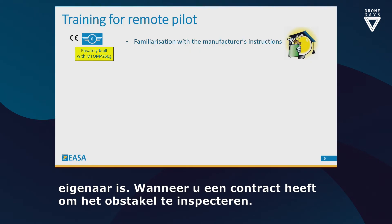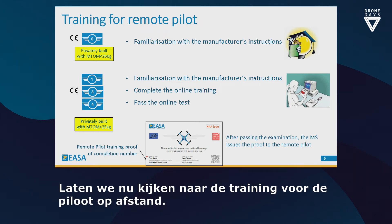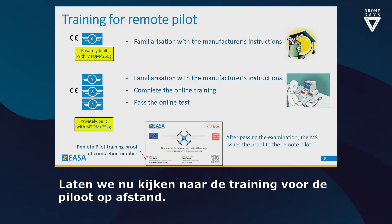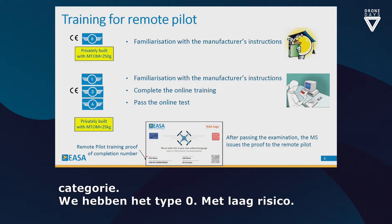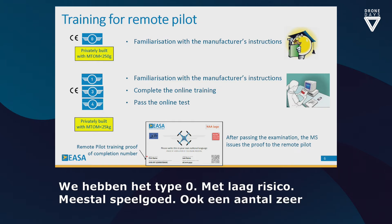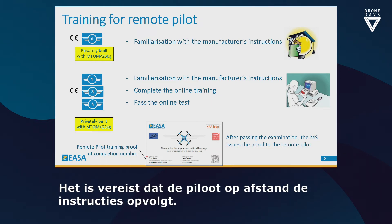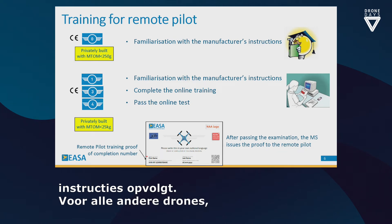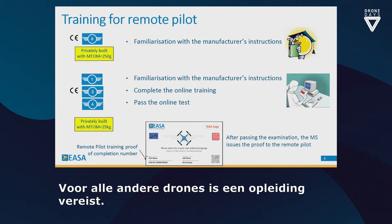Regarding training for the remote pilot: according to the subcategory, there will be different types of training. For a drone marked C0 — below 250 grams maximum takeoff mass — the safety risk is very limited, so only familiarization with the manufacturer instructions is required. For all other drones, in addition to familiarization with manufacturer instructions, we require an online training and passing an online test provided by the National Aviation Authority. You may do this training and test wherever you want in Europe, as long as you can understand the language in which it is provided.